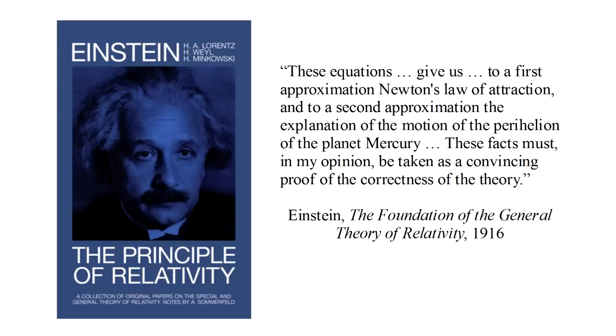Einstein wrote, "These equations give us, to a first approximation, Newton's law of attraction, and to a second approximation, the explanation of the motion of the perihelion of the planet Mercury. These facts must, in my opinion, be taken as a convincing proof of the correctness of the theory."